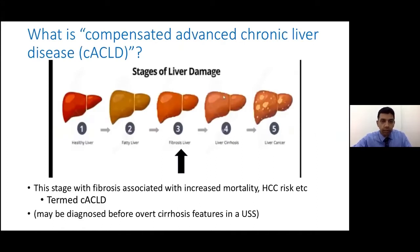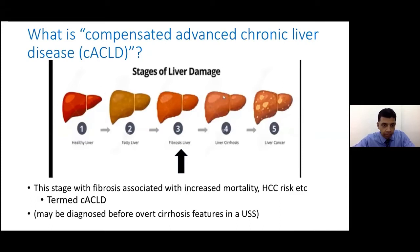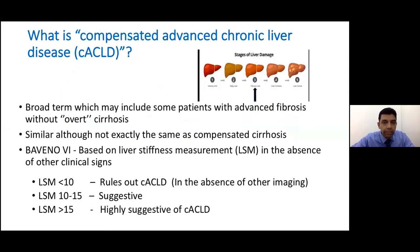Before we go to portal hypertension, let's discuss how we detect liver fibrosis. A patient with fatty liver can progress through stages one to five: healthy liver, fatty liver, fibrosis, cirrhosis, and cancer. With FibroScan we can monitor and detect patients who have early fibrosis — from that point the patient is at risk of hepatocellular carcinoma and long-term mortality. This stage is defined by the new term compensated advanced chronic liver disease, or cACLD — a broad term including patients with advanced fibrosis but not overt cirrhosis.